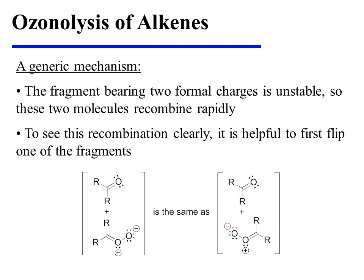The recombination of these fragments is driven by the fact that the piece bearing two formal charges is relatively unstable. To see the recombination clearly, it is helpful to first flip one of the fragments. These two representations of those fragments are identical — we have merely taken the doubly charged species and reversed its orientation on the page.